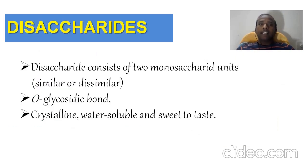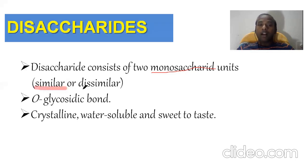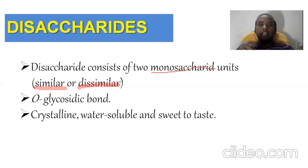Disaccharides — the name itself indicates — are the combination of two monosaccharide subunits. You should understand: the combination of two monosaccharide subunits is what we call disaccharides. There is a condition: these two monosaccharide subunits may be similar or may not be similar. Di simply means two — two monosaccharide subunits join together to form a disaccharide. The monosaccharide subunits may be similar or dissimilar.